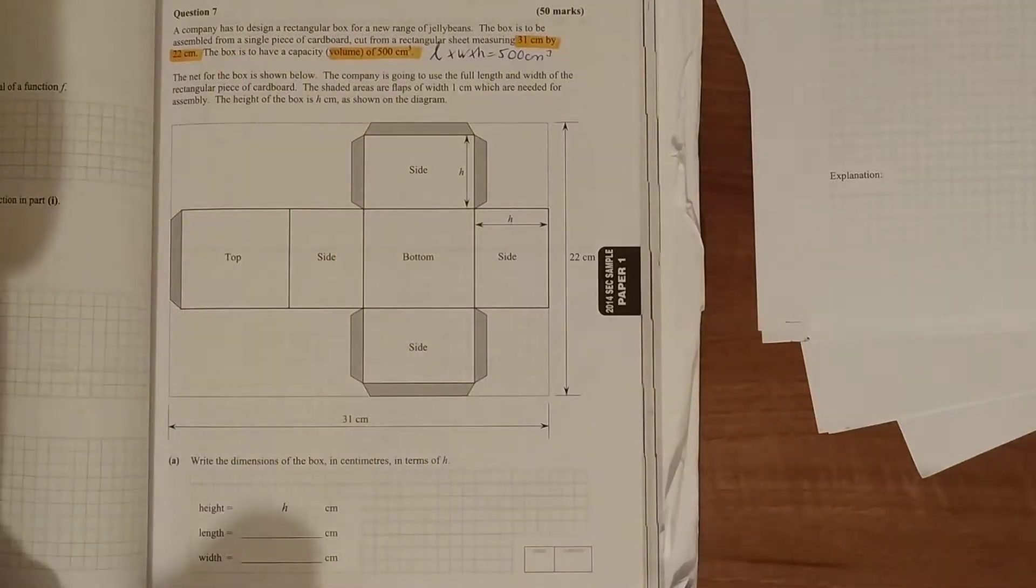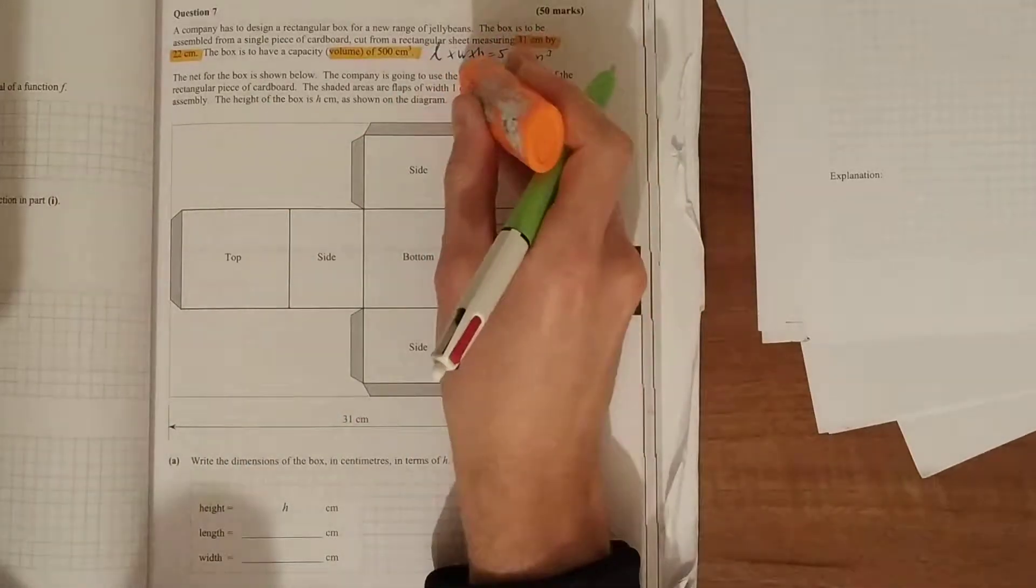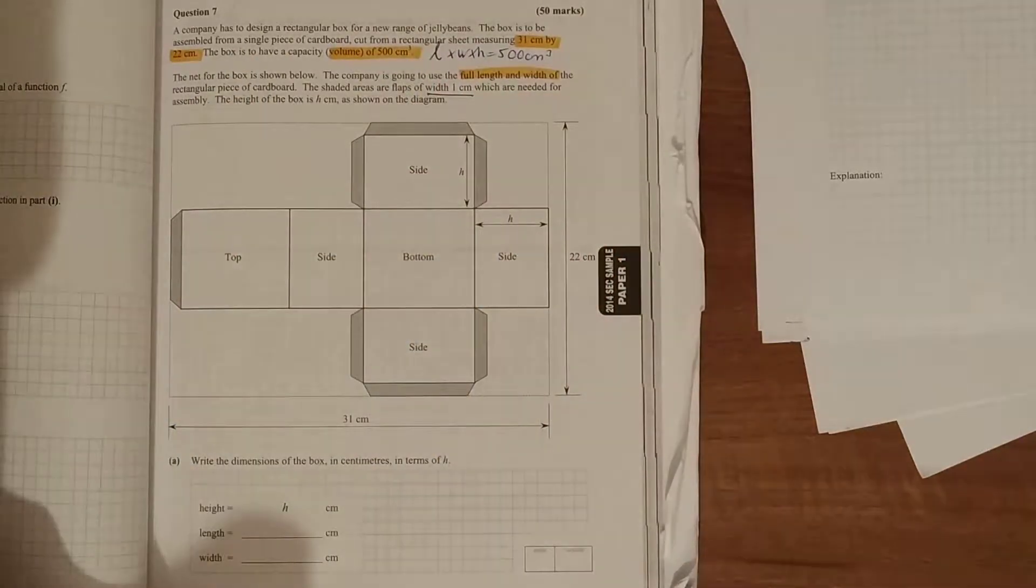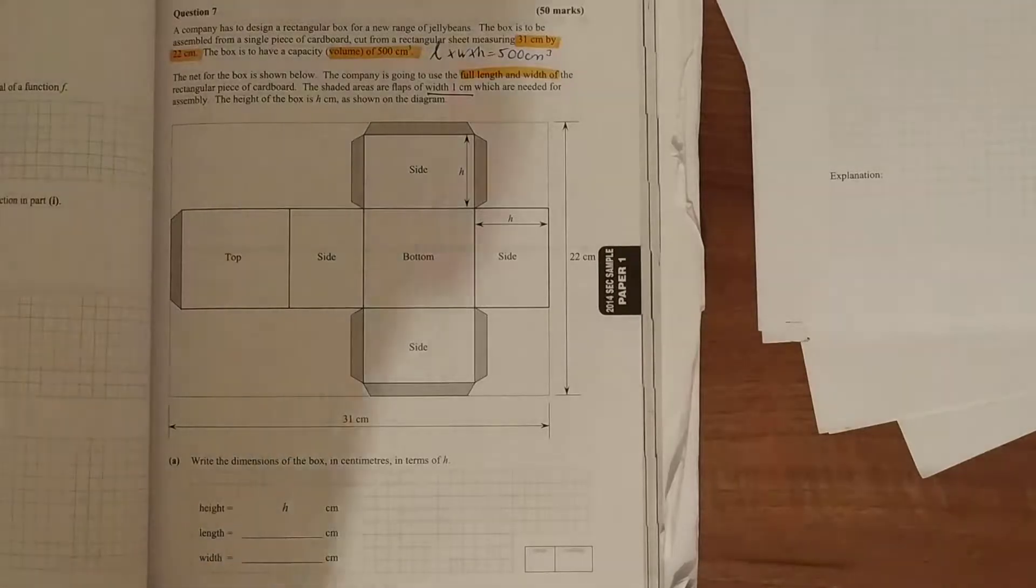The net for the box, as if we opened it out, is shown below. The company is going to use the full length and width of the rectangular piece of cardboard, and the shaded areas are flaps of width 1 centimeter which are needed for assembly. The height of the box is h centimeters as shown in the diagram.